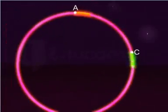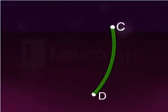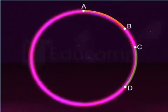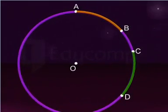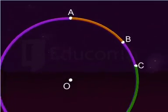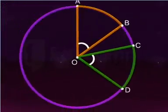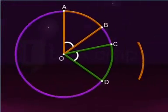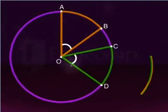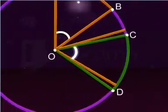In a circle, congruent arcs subtend equal angles at the center. If AB and CD are two congruent arcs of a circle with center O, and arc AB and CD suspend angles AOB and COD at the center, then since arc AB is congruent to arc CD, angle AOB is equal to angle COD.